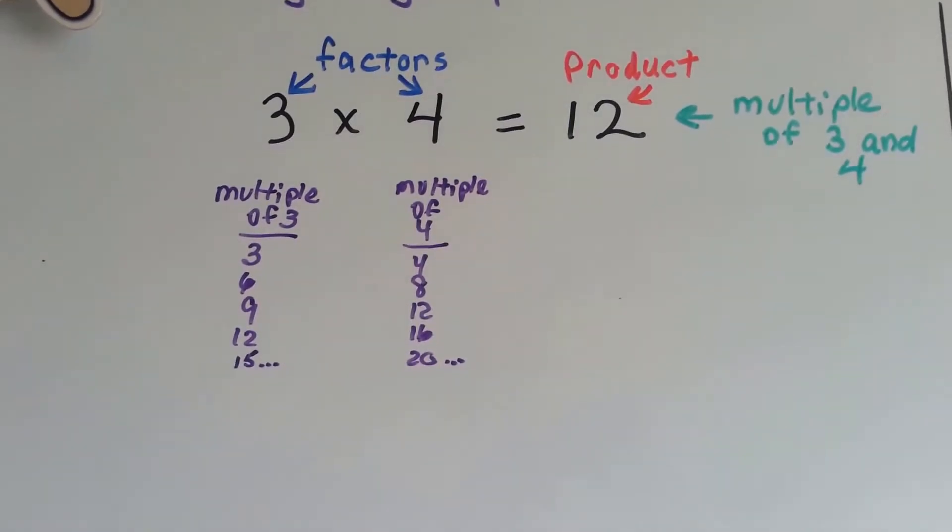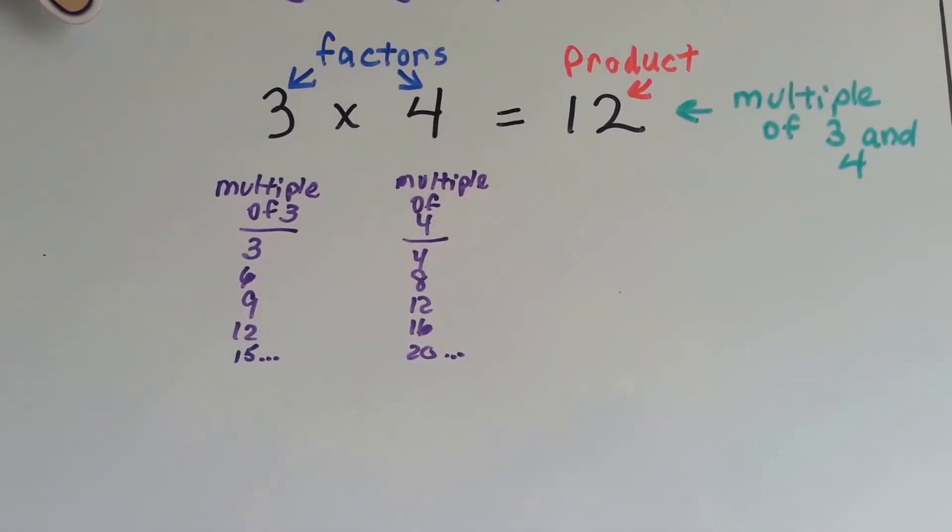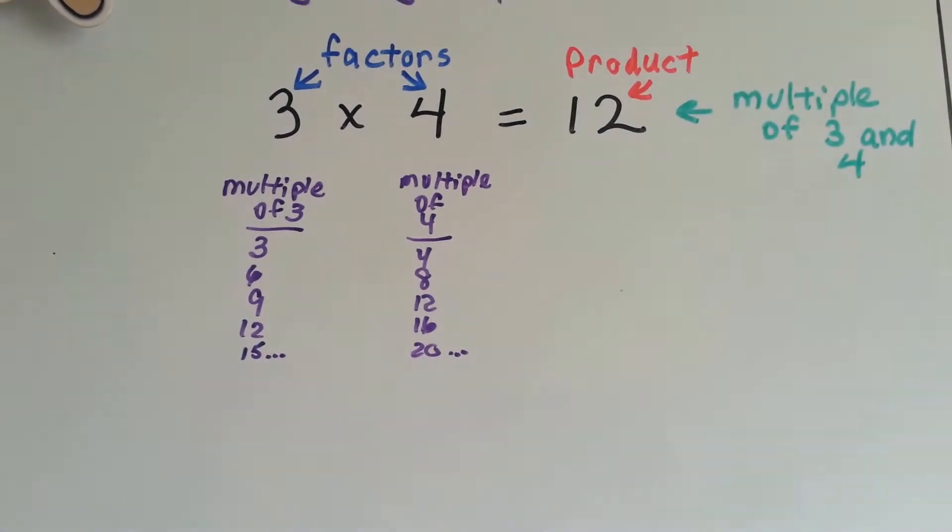The multiples of 4 are 4, 8, 12, 16, 20, the answers in the 4 times table. So that's the easiest way to remember it.